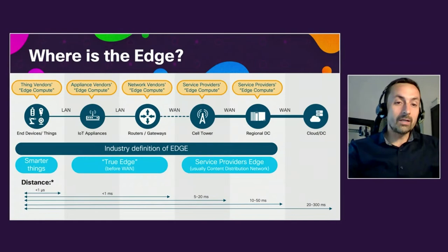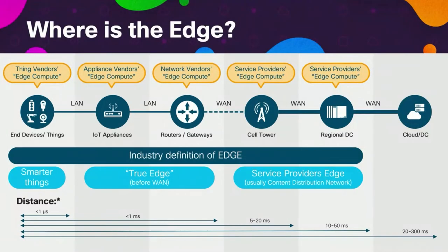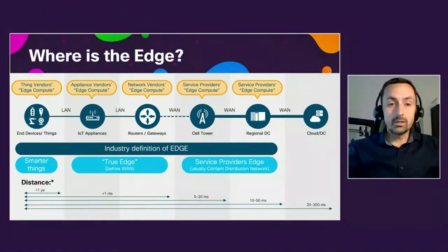I already mentioned the edge and edge data processing. It's very important, if you ask me, to first determine what is the edge, because it depends on the context and it depends on whom you talk to when it comes to their understanding of the edge. The good news is there is no right or wrong — it depends on the context. For me, the edge is the outer control boundary of my solution, and in the context of today's session, it's Cisco routers and gateways.